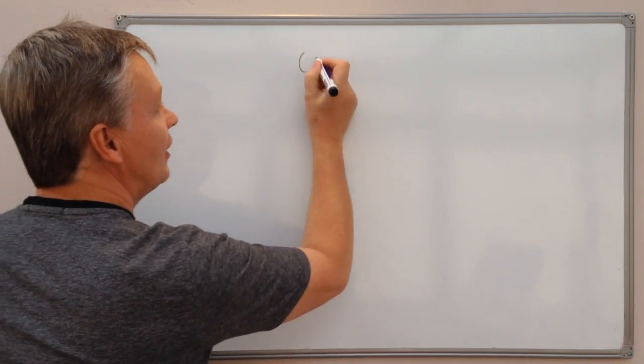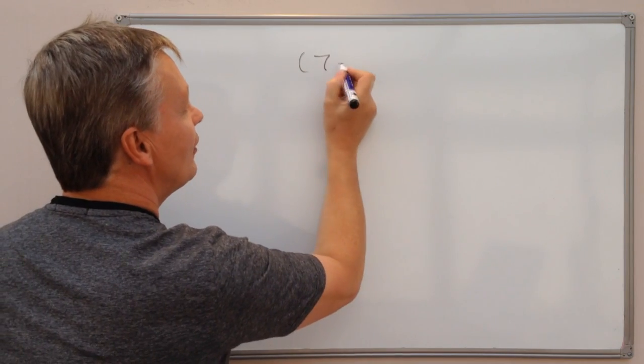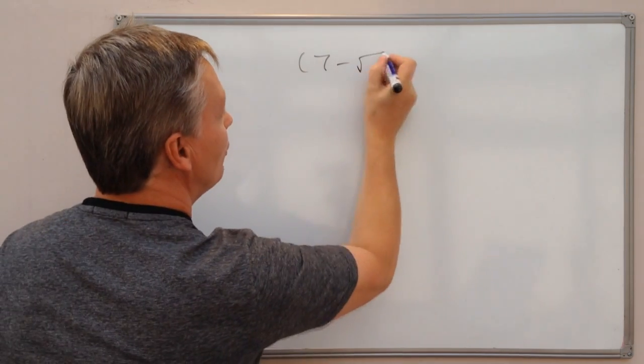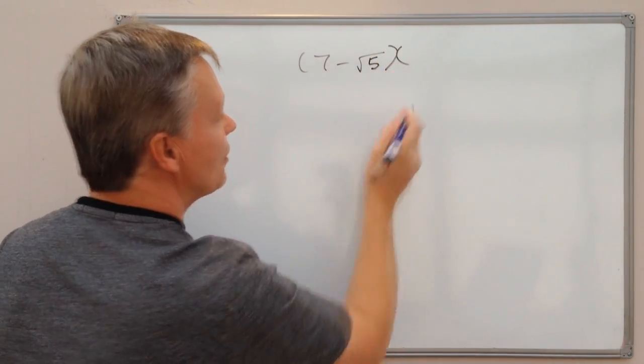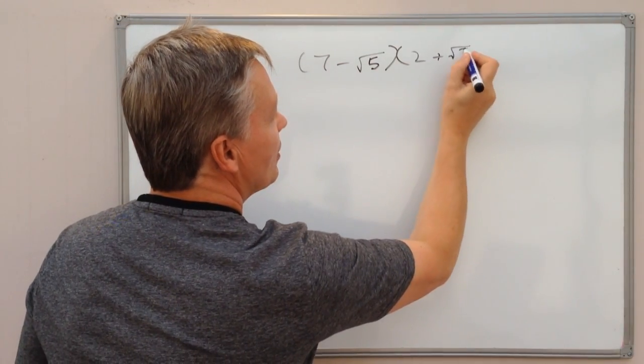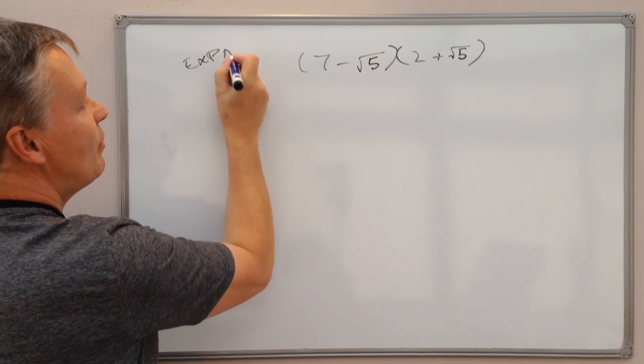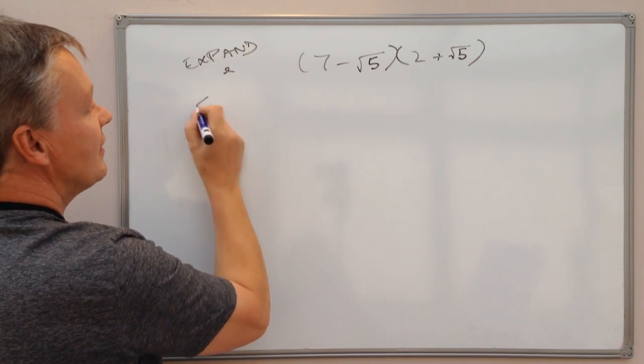So a typical expression would be, or this particular question is going to be 7 minus root 5 and they want you to multiply that by another bracketed term which is 2 plus root 5 and the question is all about expand and simplify.